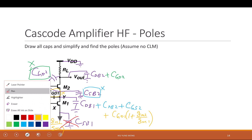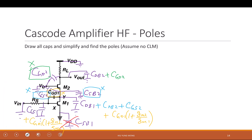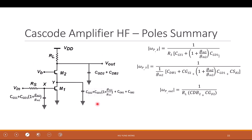So now we have all the capacitances and can find the poles. It's a bit messy, so let's go directly to the answer from the textbook. There are three poles. At node X the resistor to ground is RS times the total capacitance. At node Y, looking up is 1/Gm2 and looking down is infinity, ignoring channel length modulation.